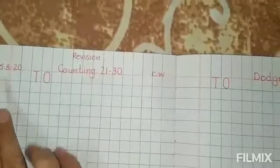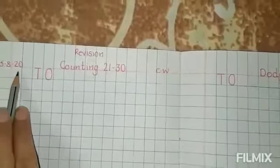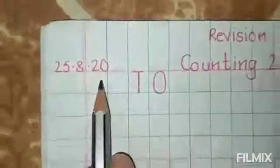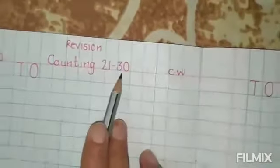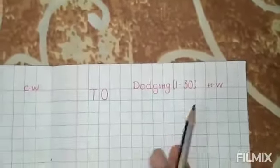First of all, we have to put date here. So, 25, 8, 20 and today in CW, we have to do counting from 21 to 30 in CW and in HW. Aur hum HW next space pe banayenge bataun.